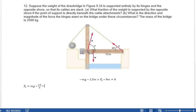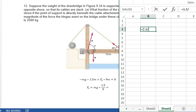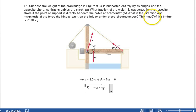So, this is 1.5 by 9 is 0.167 or 16.7%. And the question was, what fraction of the weight is supported by the opposite shore. And so, we can just, from here, conclude 16.7%.